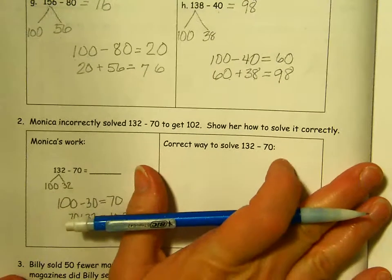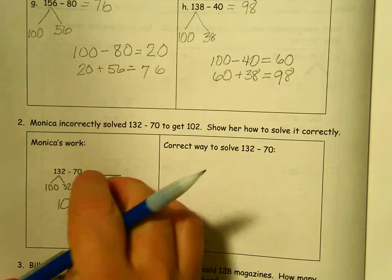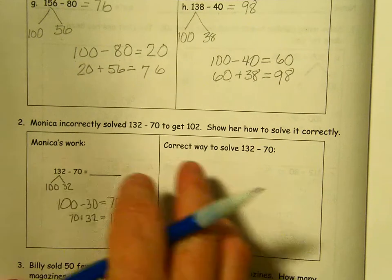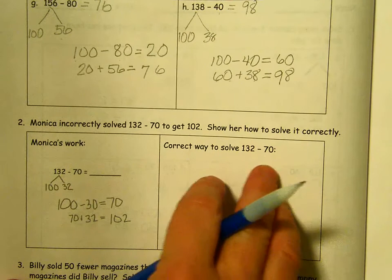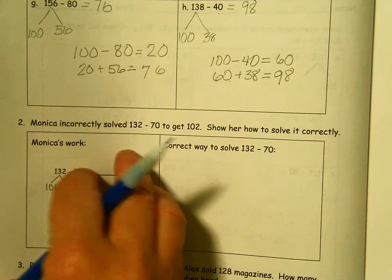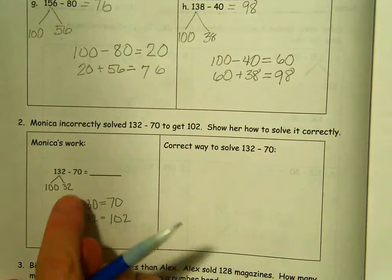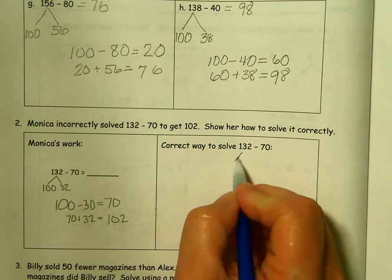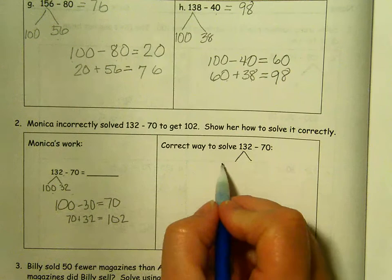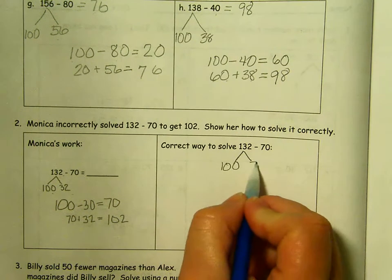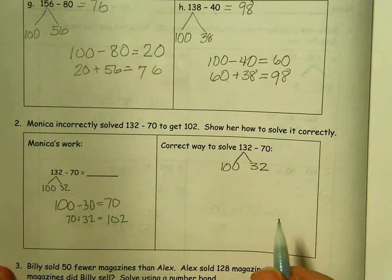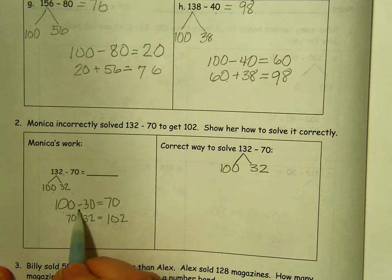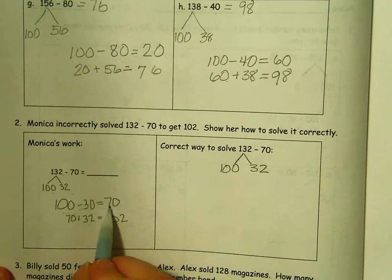Okay, here's my favorite kind. They're showing a student's mistake. So we have to find the way to find out what mistake she made and how to do it correctly. So I'm looking at, it looks like she started correctly. 132, she decomposed 132. That's correct.